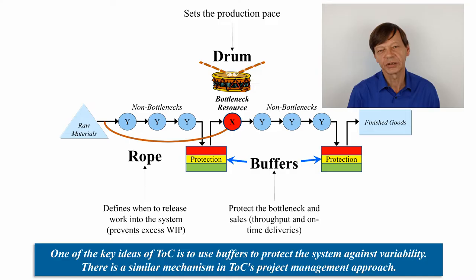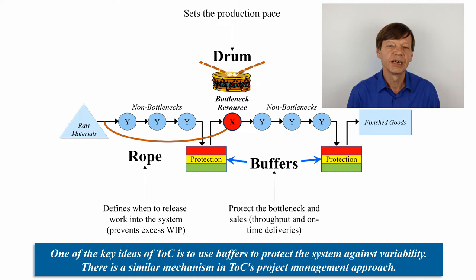The production flow mechanism of the Theory of Constraints is called the drum-buffer-rope. It is briefly described in the best-selling novel The Goal, but because it's a novel format it's not really very clear about how it actually works. In fact, some of the bits are missing or hardly explained at all. So let me give you a formal description of what this is.